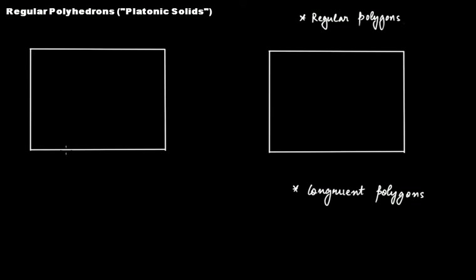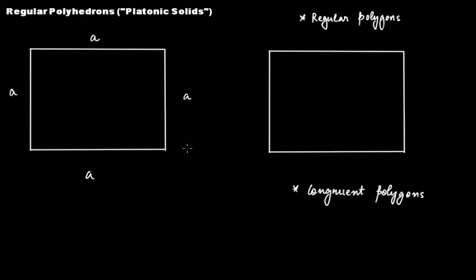You have this square here. In a square, all the sides have equal measurements — they have the same measurements. That makes this particular polygon, in this case a square, a regular polygon because all the sides are equal.